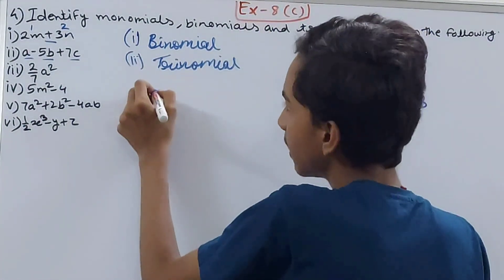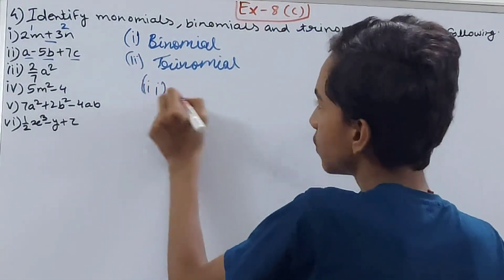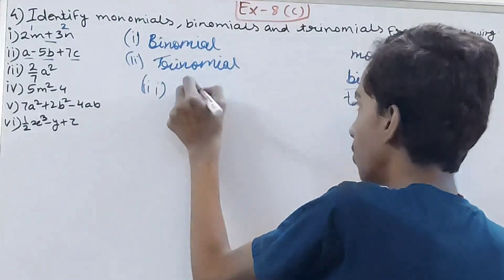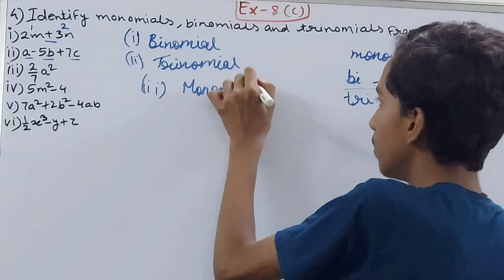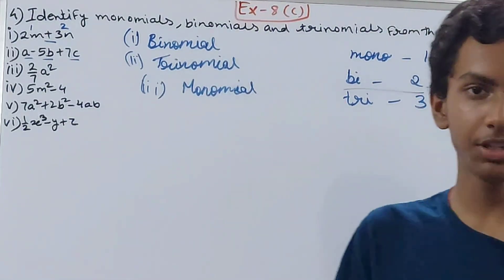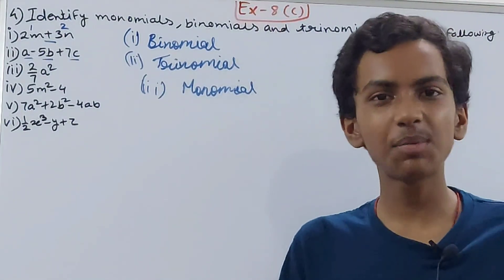The third one: 2/7 a². This is simply a monomial because there is nothing that is separated. You don't have to look at multiplication or division - terms are always separated by plus and minus signs, not multiply or divide. That's why this is a monomial.